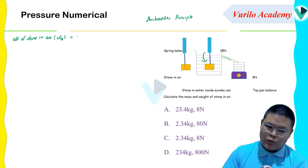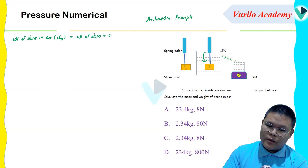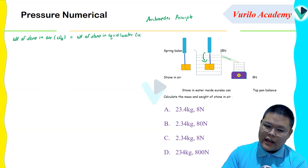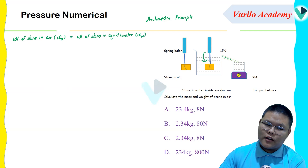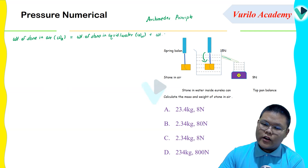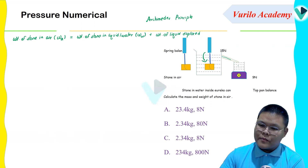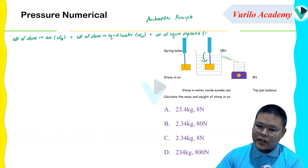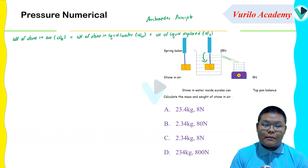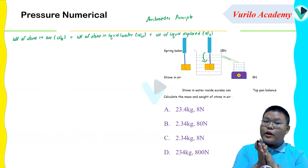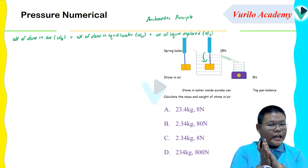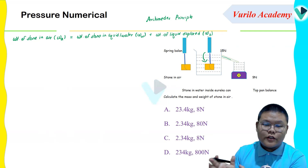Weight of stone in liquid or water, plus weight of liquid displaced. So: weight of stone in air is equal to weight of stone in liquid or water, plus weight of liquid displaced.